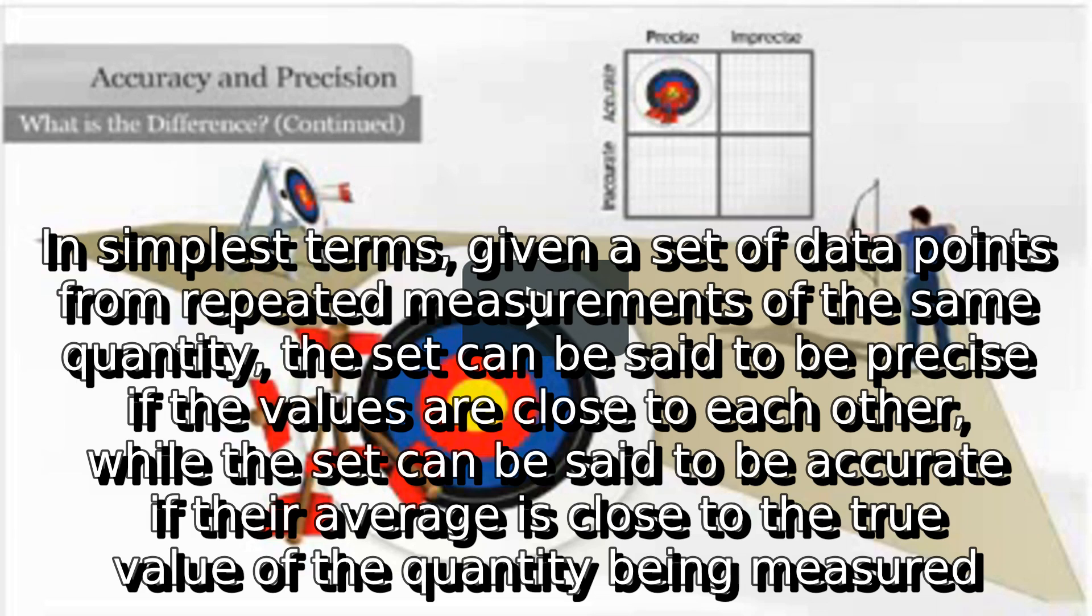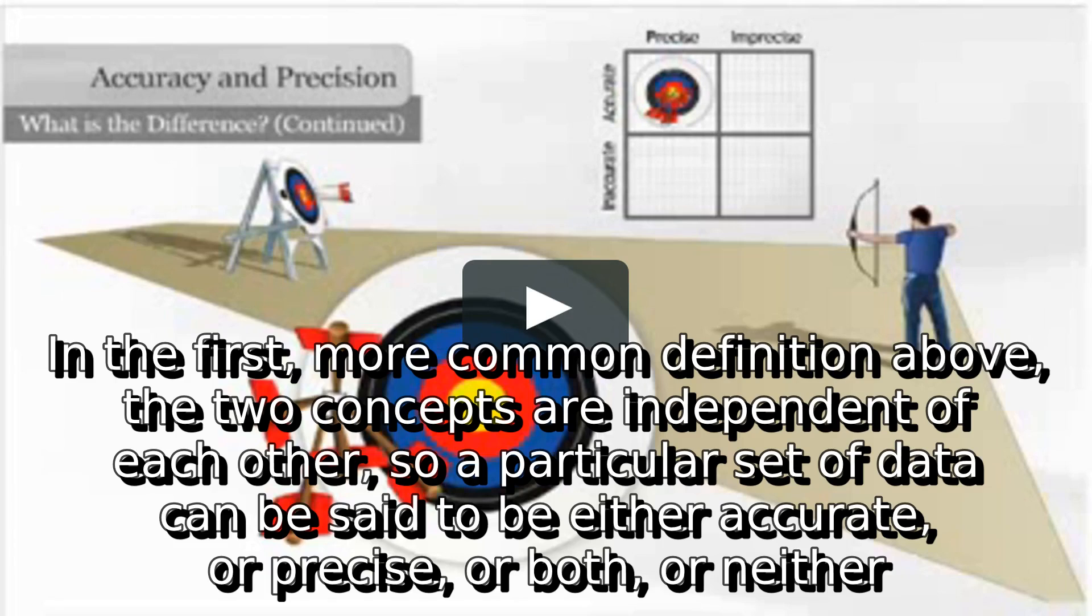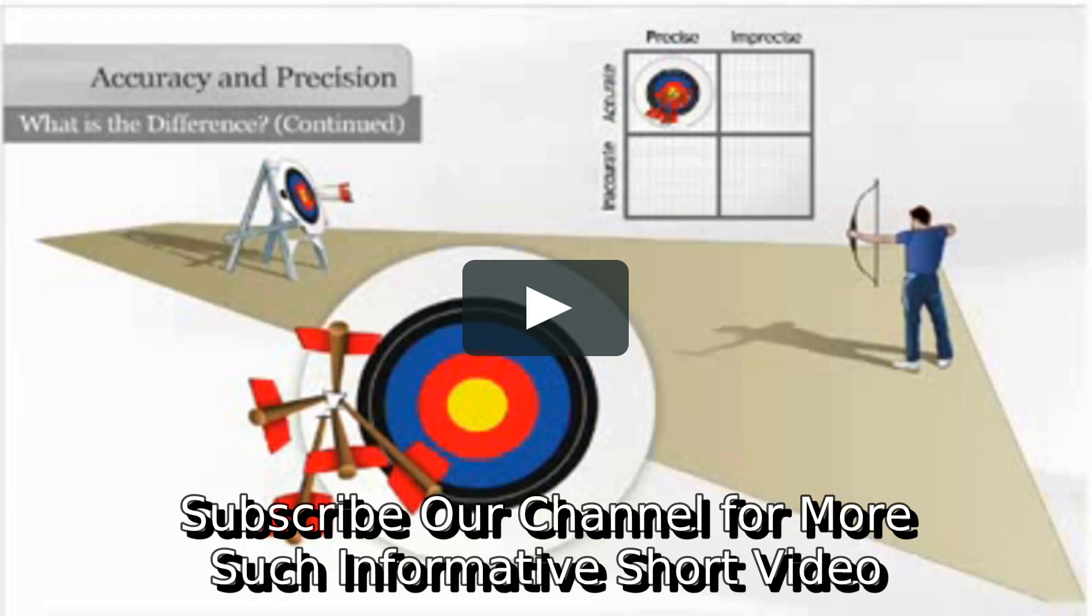In the first, more common definition above, the two concepts are independent of each other. So a particular set of data can be said to be either accurate or precise, or both, or neither. Subscribe to our channel for more such informative short videos.